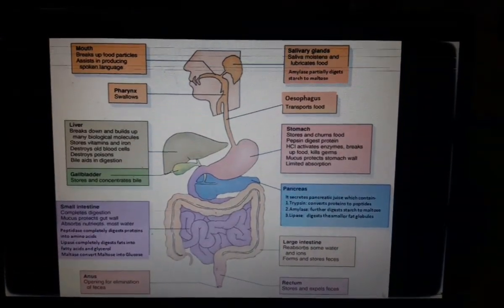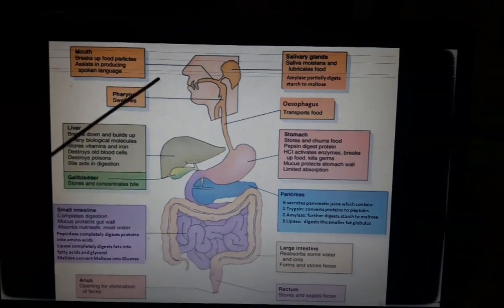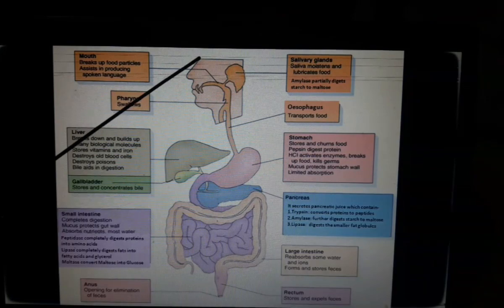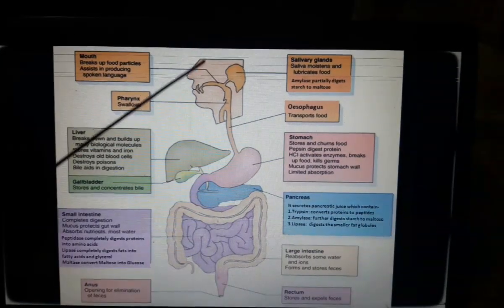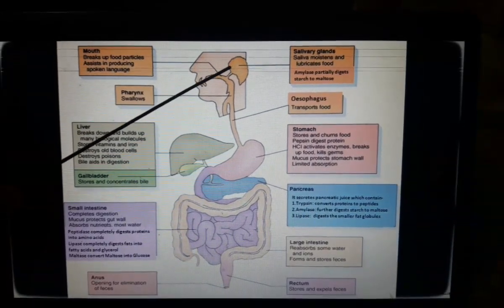Let's move to the detail of the functioning of each part. Let's start with the mouth or buccal cavity. The buccal cavity contains teeth, tongue and salivary glands.